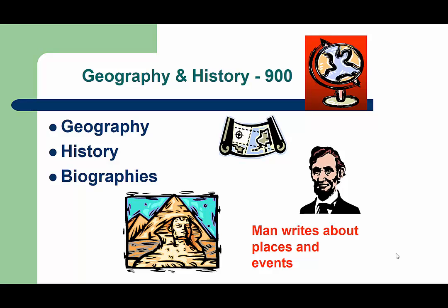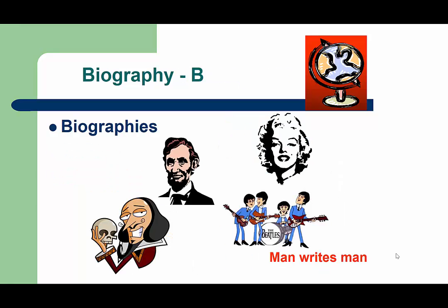Want to know about a place in the world, or something that happened in the past? Head to the geography and history section, or the 900s. Most libraries have so many biography books that they put them in a separate section, like we do — our call numbers for biography simply start with the letter B.